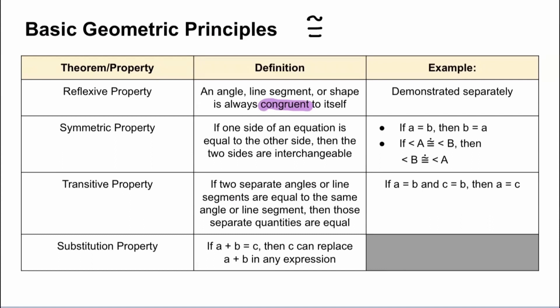So instead of saying angle A is equal to angle B, the proper way would be to say angle A is congruent to angle B. Now, back to this definition: an angle, line segment, or shape is always congruent to itself. That doesn't give us a lot to work with, so for our example we're going to demonstrate it separately so that we can further break that down.